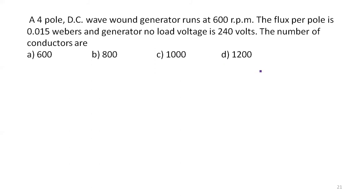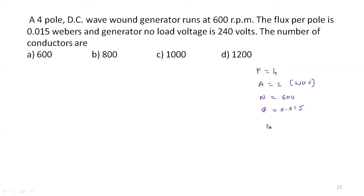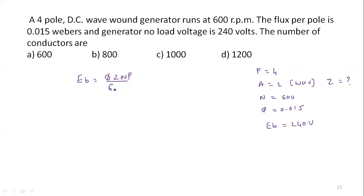A 4-pole DC wave wound generator. Number of poles equals 4. For wave winding, the number of parallel paths equals 2. The generator runs at a speed of 600 RPM. Flux per pole φ equals 0.015 Weber. The generated voltage Eb equals 240 volts. We have to find Z, the number of conductors. Using the same formula: Eb equals φZNP divided by 60A.